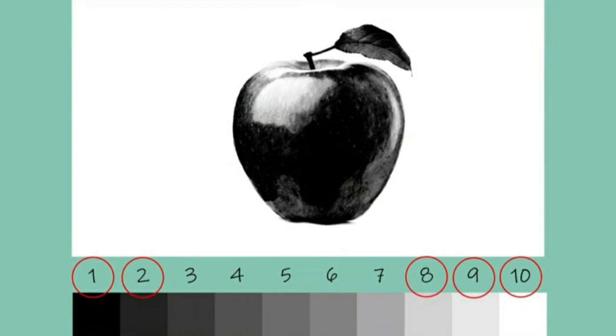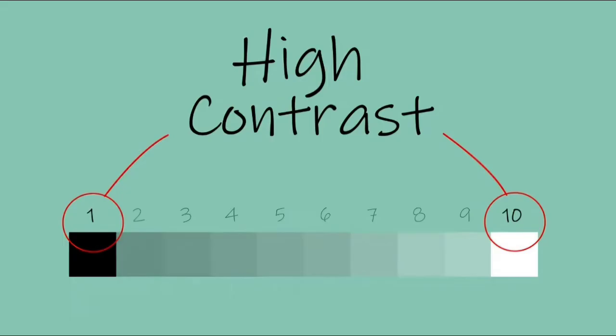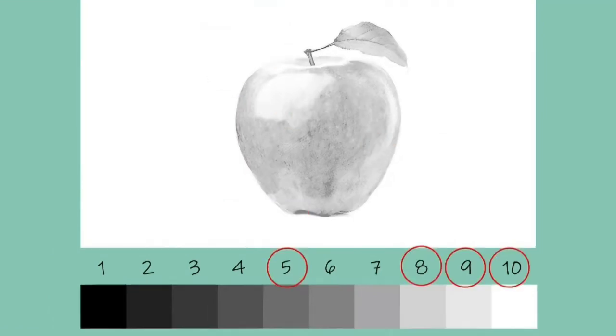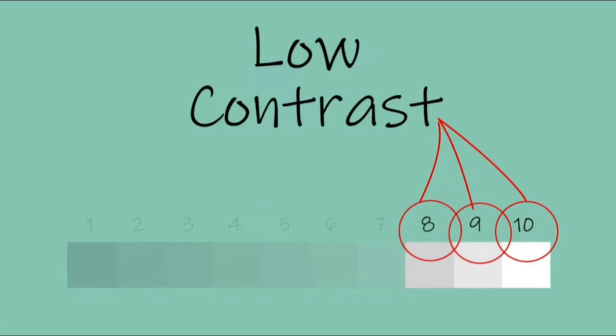This apple jumps from very dark to very light quite quickly — it lacks values in between. This is called a high contrast image. Now let's look at the picture of this apple: it has quite a high value range and it lacks the value numbers from the lower ranges.